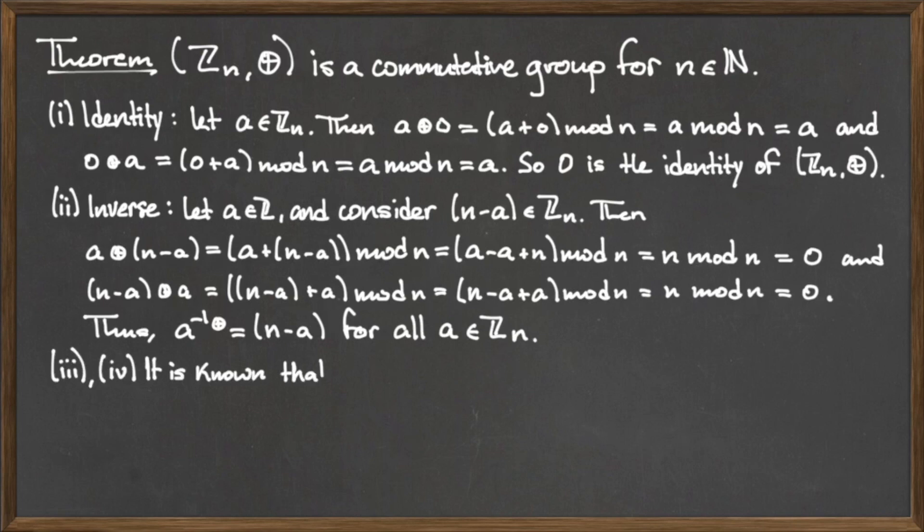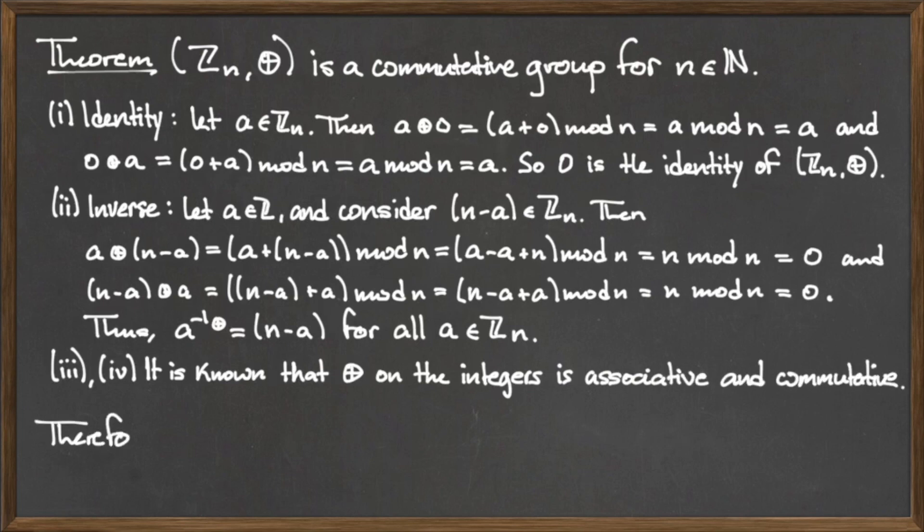Finally, we have stated previously that addition of integers is both associative and commutative, so these properties are automatically satisfied.